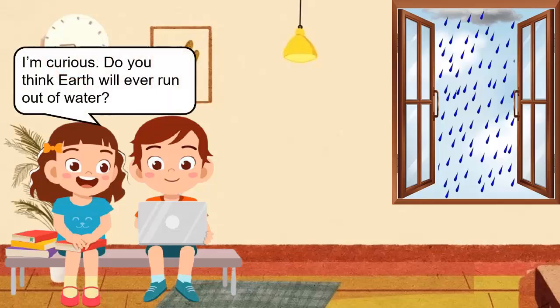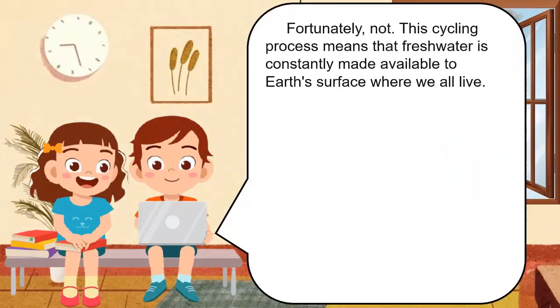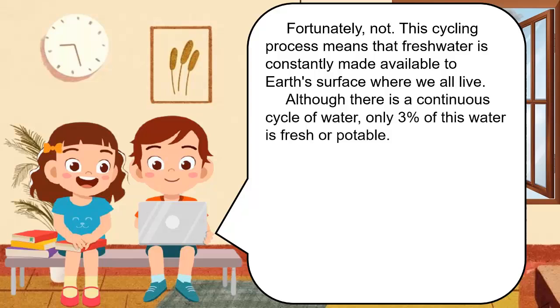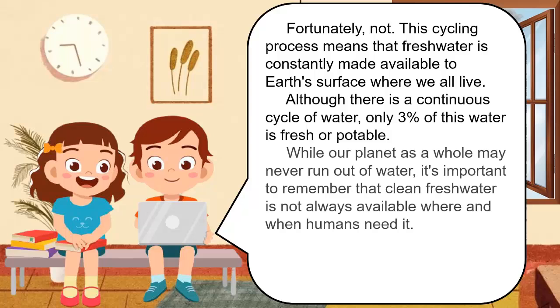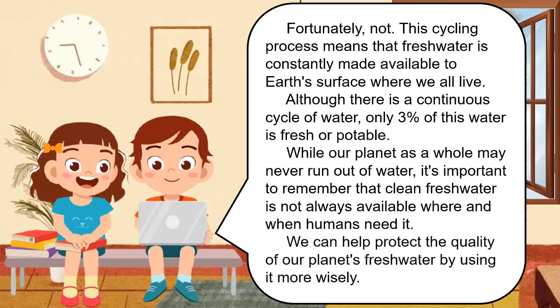Do you think earth will ever run out of water? Fortunately, not. This cycling process means that fresh water is constantly made available to earth's surface where we all live. Although there is a continuous cycle of water, only 3% of this water is fresh or potable. While our planet as a whole may never run out of water, it's important to remember that clean fresh water is not always available where and when humans need it. We can help protect the quality of our planet's fresh water by using it more wisely.